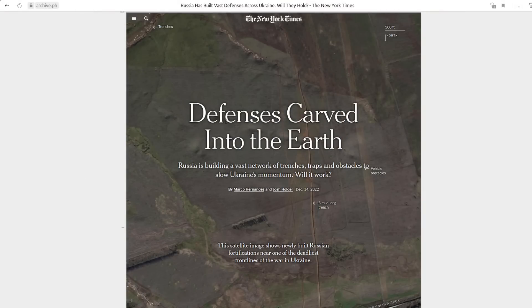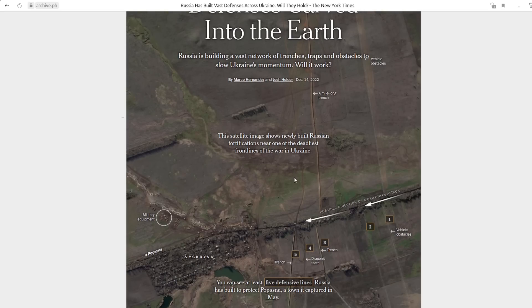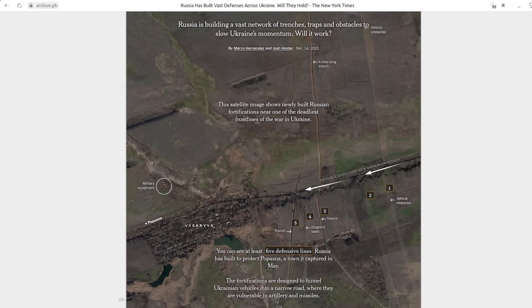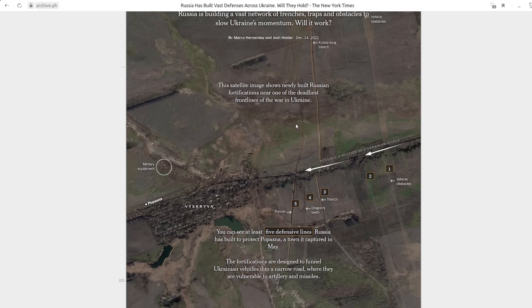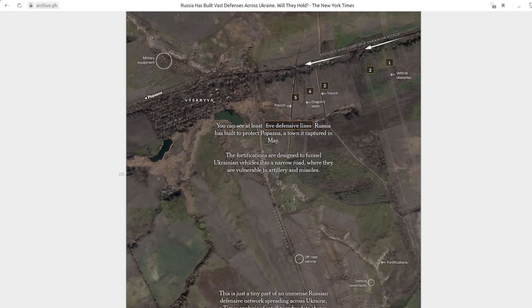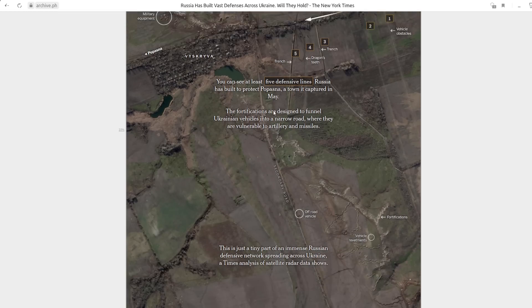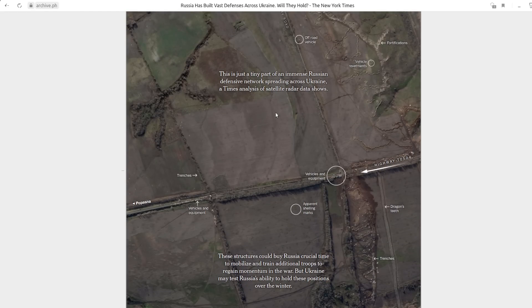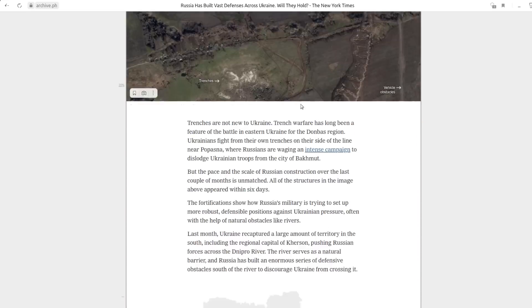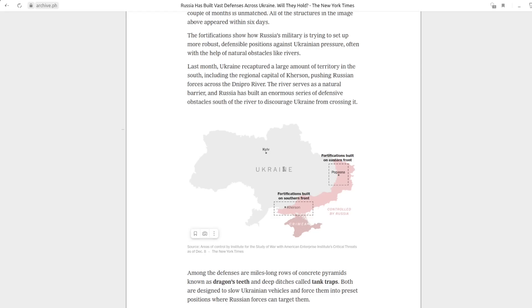I want to remind people of the nature of Russian defenses. I'm going to go back to this December 2022 New York Times article titled 'Defenses Carved into the Earth.' Russia is building a vast network of trenches, traps, and obstacles to slow Ukraine's momentum. Will it work? Apparently, at least for an entire month into Ukraine's offensive, it has worked. This satellite image shows newly built Russian fortifications near one of the deadliest front lines of the war in Ukraine, near Popasna, east of Bakhmut. There are multiple layers of defenses about midway between Bakhmut and Popasna.